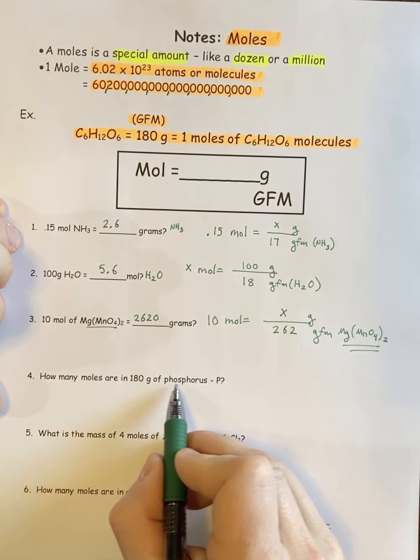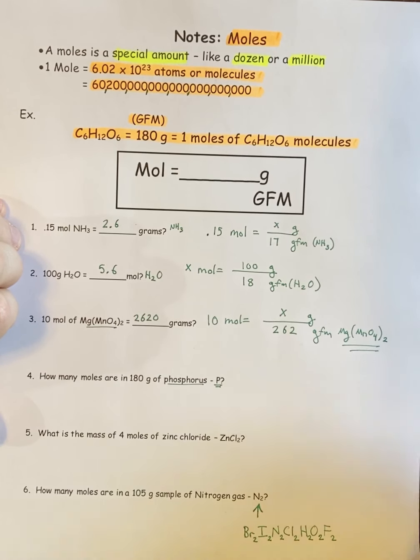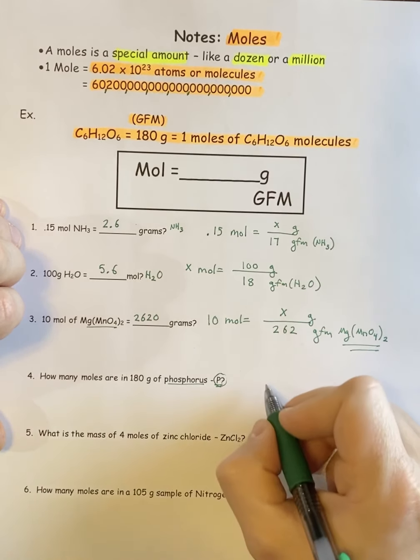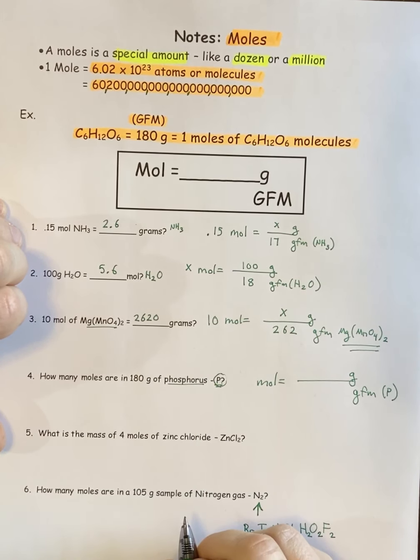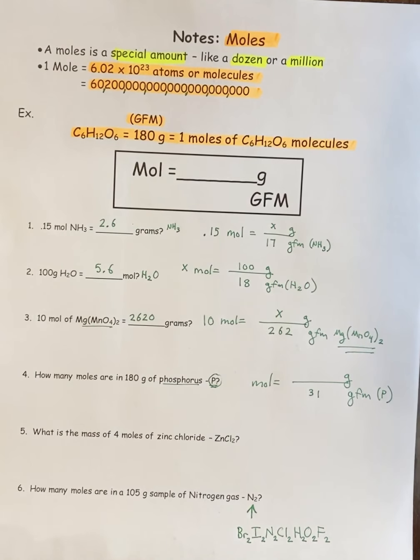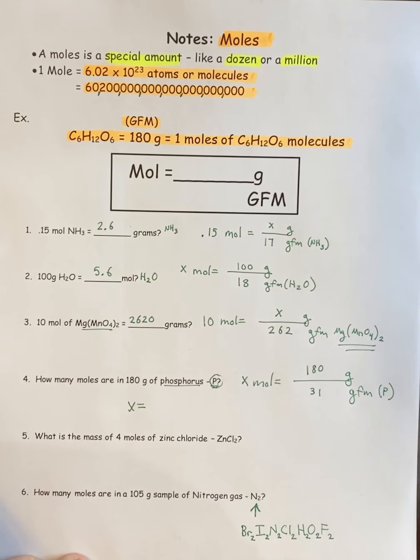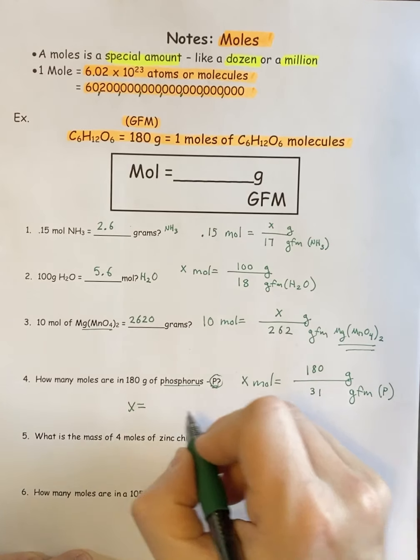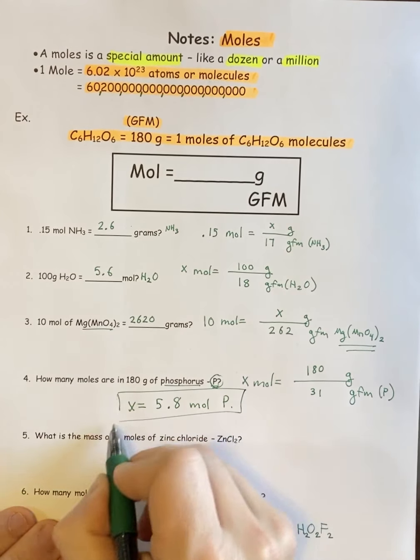Next one, how many moles are in 180 grams of phosphorus? So this is phosphorus, it's an element. The formula for phosphorus is just P because it's an element. It's not actually a compound, it's not made of two or more different elements. Your GFM would just be the atomic mass of a single P atom. So the GFM here is 31. They give me 180 grams, and they want to know how many moles. 5.8 moles of P, and there's my answer.